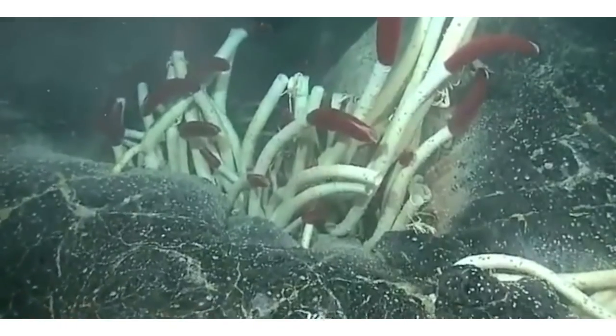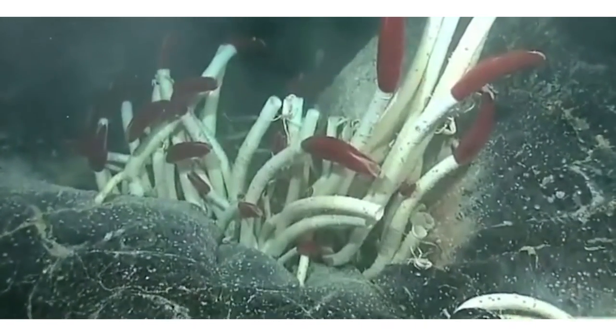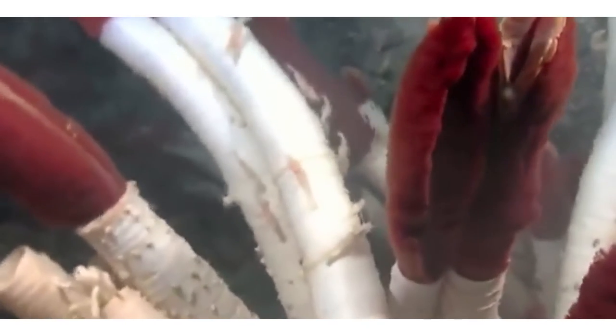Riftia has learned to harness the power of chemosynthetic bacteria that are integrated into a large internal sac termed trophosome. The symbionts use hydrogen sulfide as an energy source to convert carbon dioxide to sugars.